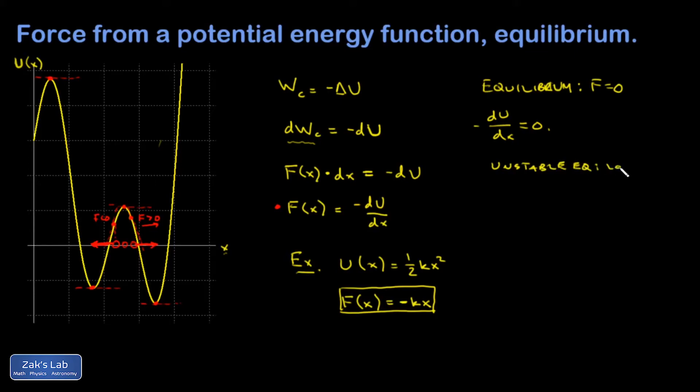That would occur at a local maximum of the potential energy function. You can probably guess what's going to happen next. Now I consider a particle located right here, corresponding to a local minimum of the potential energy function. If I look at a slight displacement from that, my potential energy graph has a positive slope.